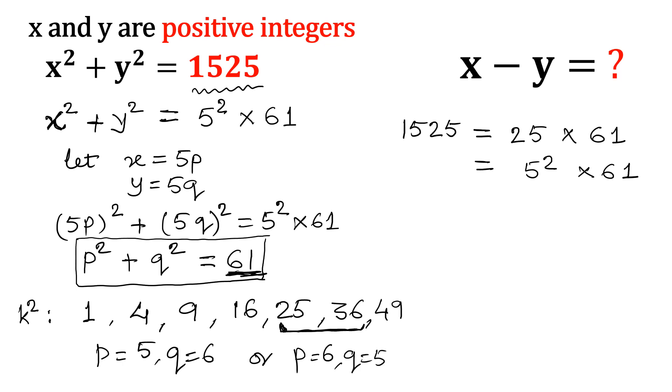So what would be the value? Let me write p, q the ordered pair. So I can write 5, 6 or 6, 5. Any value I can consider.